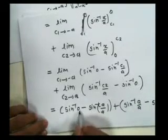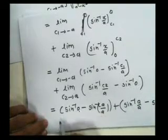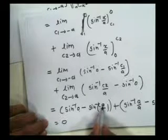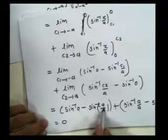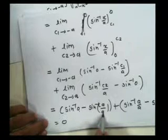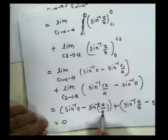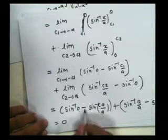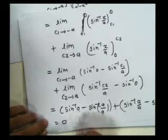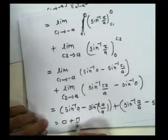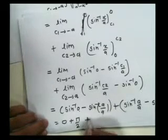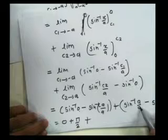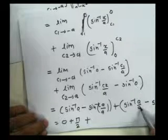Now sin inverse of 0 is 0. Sin inverse of minus a by a is sin inverse of minus 1, and sin inverse of minus 1 is minus π/2. So we have minus times minus π/2 plus sin inverse of a by a, which is sin inverse of 1, and sin inverse of 1 is π/2.